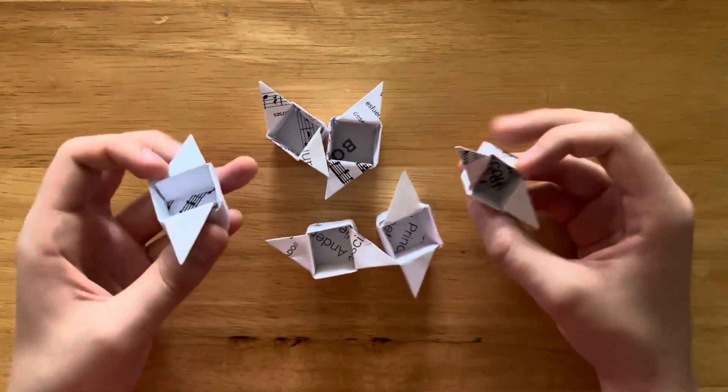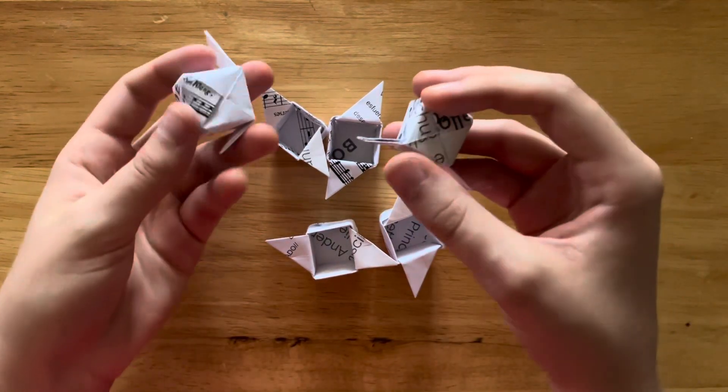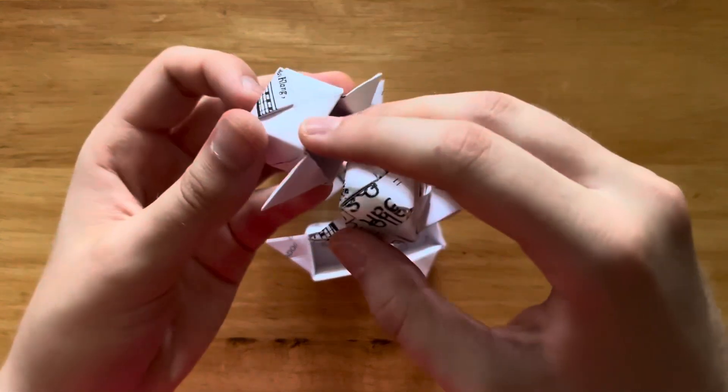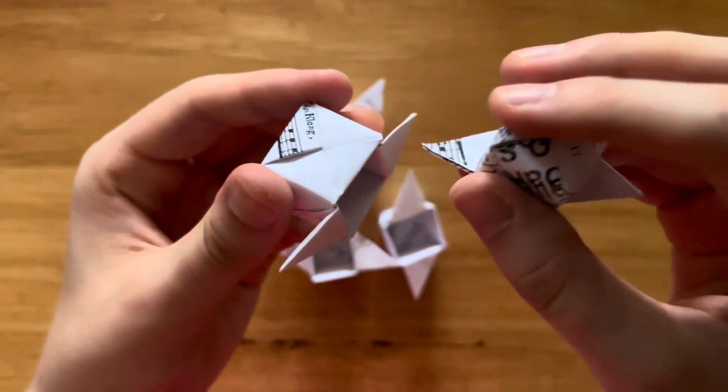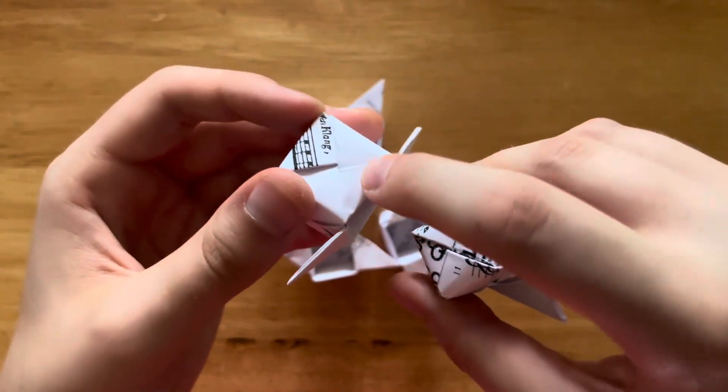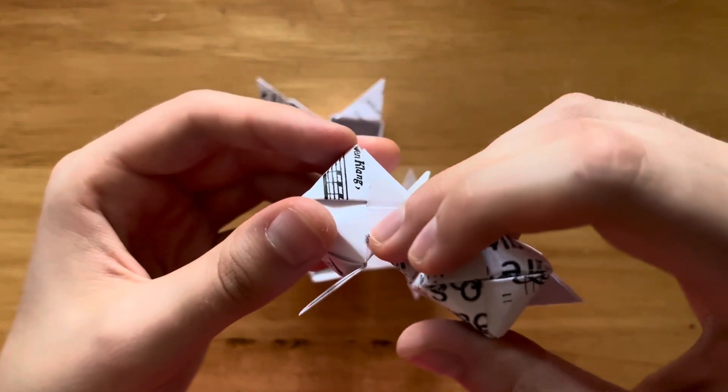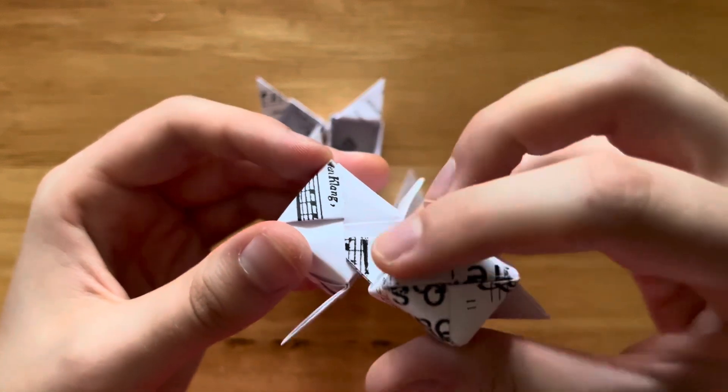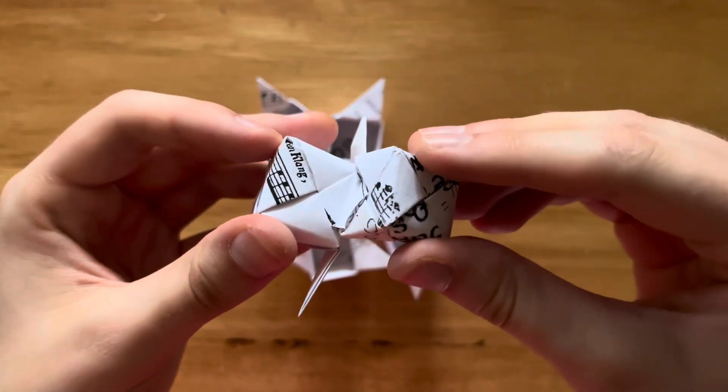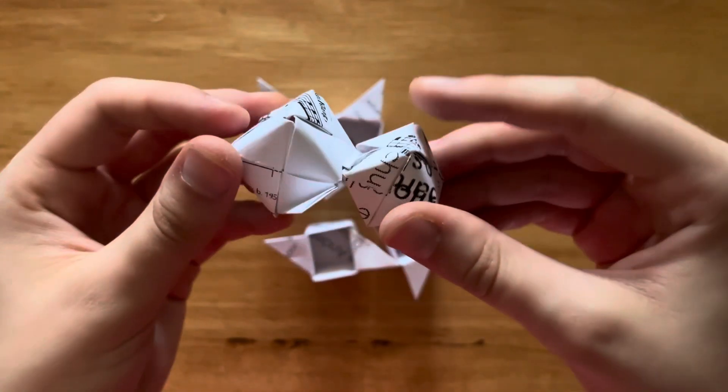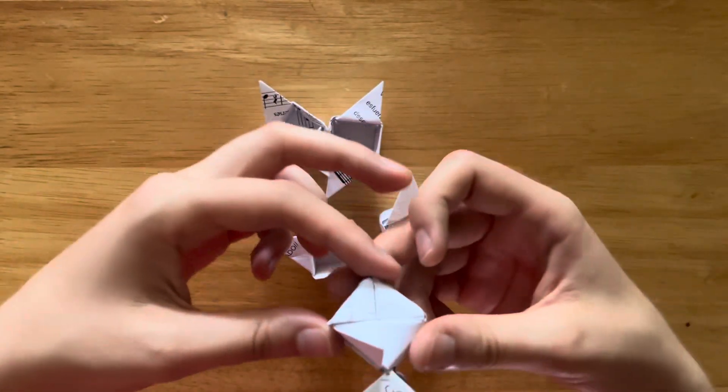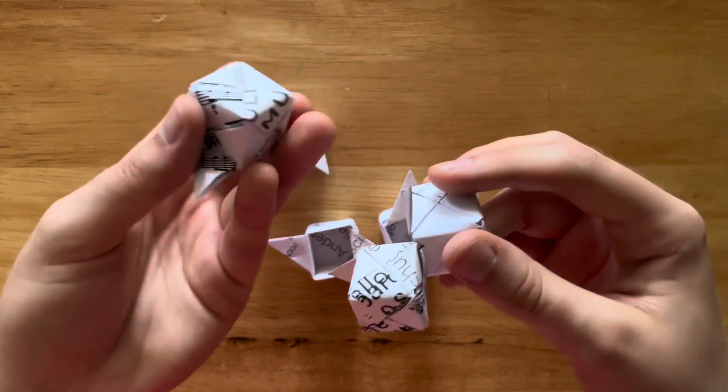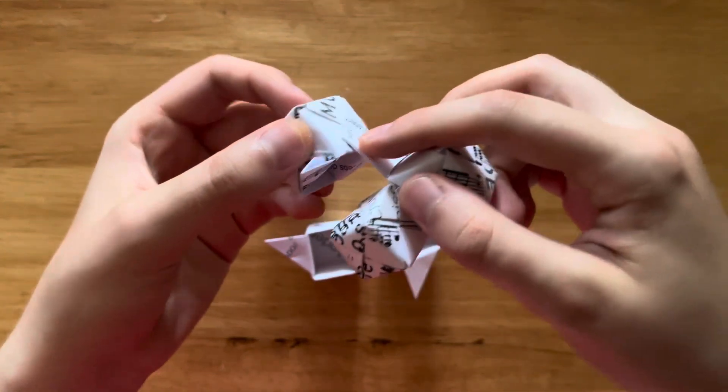Now all we have to do is put these together into our extended cube. Here is your pocket. We're going to put the flap into the pocket like that. We're going to do that with all of these. You want these to sit at about a 90 degree angle because that will best replicate the cube experience.